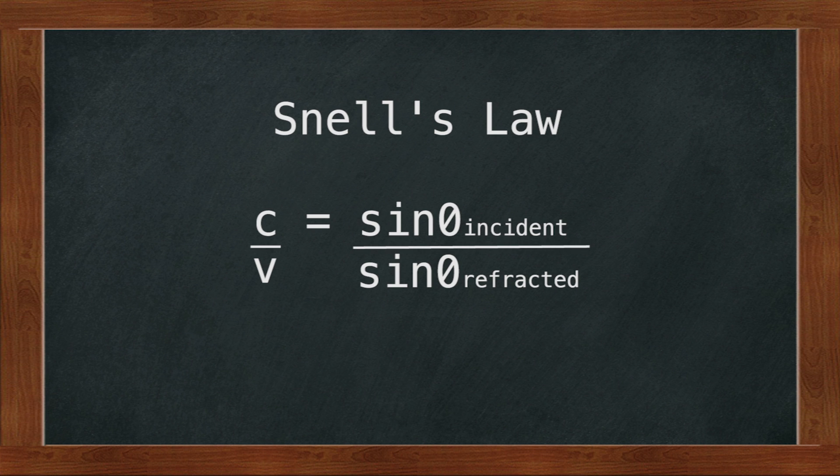In this experiment, you will use Snell's law to calculate the index of refraction N of glass. Once you have that value, you will use it to determine the speed of light in glass. You will peer through clear glass and use straight pins as markers to indicate the apparent path of light.